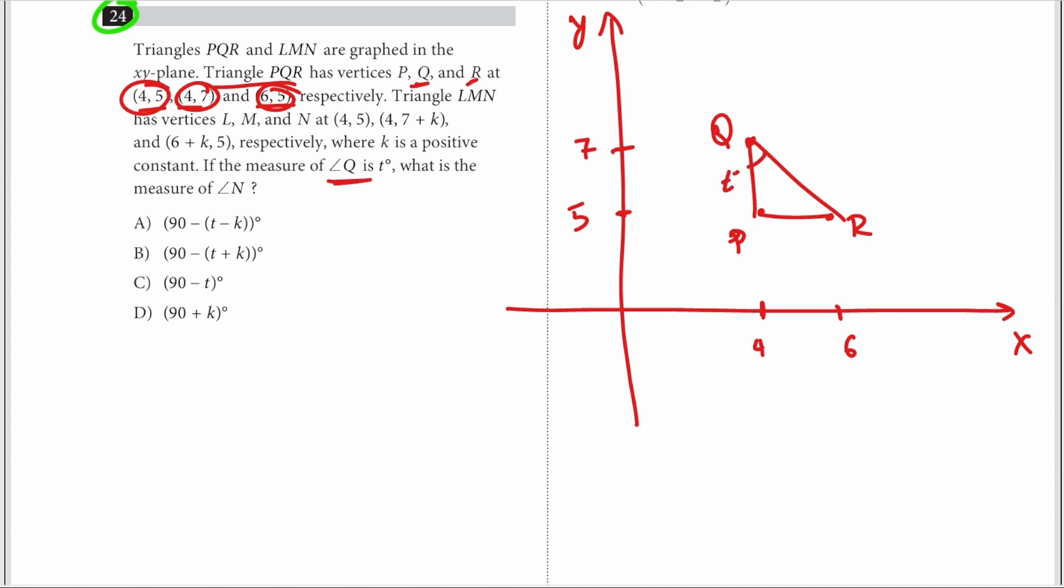All right, what can we say about this triangle PQR? Well clearly this side is equal to 2, this side is also equal to 2. Now this is a right triangle, right angle. So this side is 2, this side is 2, hence angle t is 45 degrees because it's an isosceles right triangle. So angle Q, which is equal to t degrees, is equal to 45 degrees - that we know.